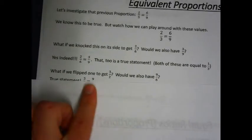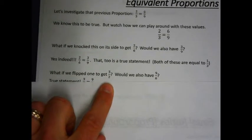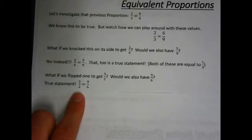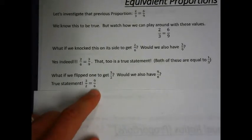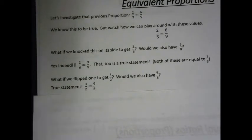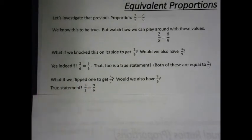But what if we flipped it? What if we took 2 thirds over 6 ninths and totally flipped it — would that be a true statement? And the answer is yes. True statement. 3 over 2 is indeed equal to 9 over 6. Still equal ratios, still a proportion — an equivalent proportion.